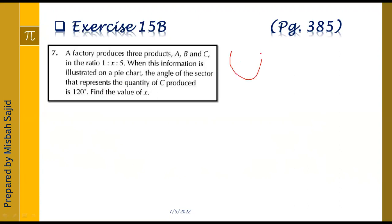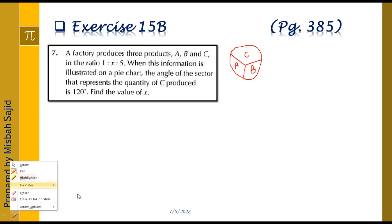If I try to make a pie chart, the sectors represent quantities C, A and B. For C, the angle of the sector is given as 120 degrees. For A and B, the angles are not given — only the ratio values are given. We have to find out the value of X.